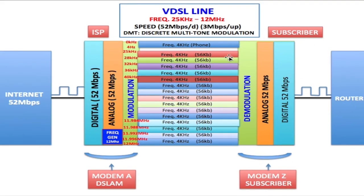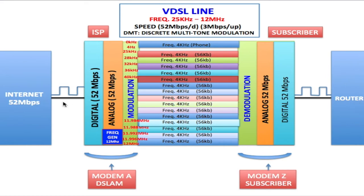Once the modem at the subscriber's end receives the data, it looks at each and every one of these 4 kilohertz channels, removes the 56 kilobits of analog data, and adds all of that data together to produce the total — which adds up to 52 megabits of data, as originally sent. This process is called demodulation. The analog data is then converted back to digital format and sent to your router to supply internet data to your local area network, where your computers and wireless equipment are. The process from the router back to the internet is simply the reverse.